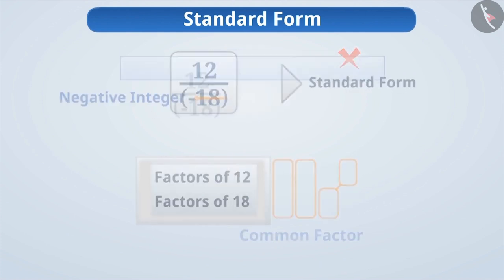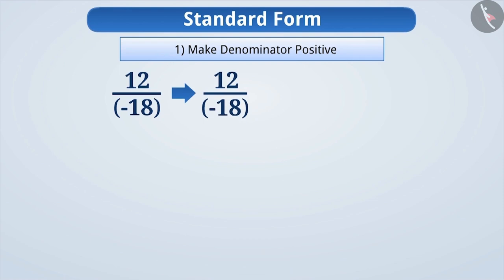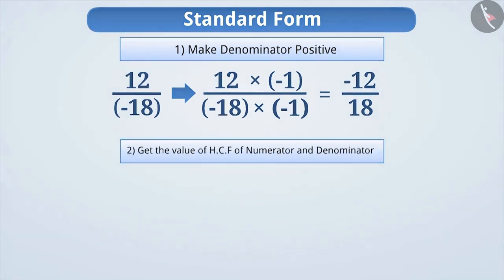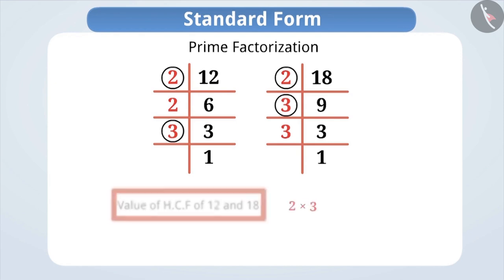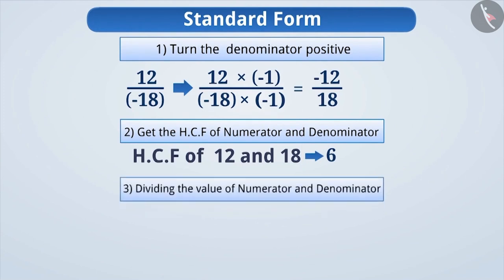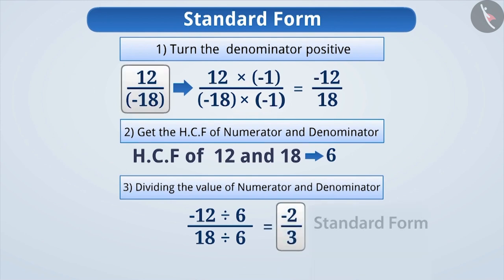If we have to convert it to its standard form, first we have to turn the denominator positive. We will multiply both the numerator and denominator of this rational number by minus 1. By doing so, it will keep the value of the number the same, but the denominator will definitely become positive. Now, we ignore the sign of the numerator and denominator to get the HCF. For this, we will perform the prime factorization of 12 and 18. By multiplying their common factors, we get their HCF as 6. Now, we divide both 12 and 18 by the HCF 6, by which we get the rational number minus 2 by 3. This is the standard form of 12 by minus 18.